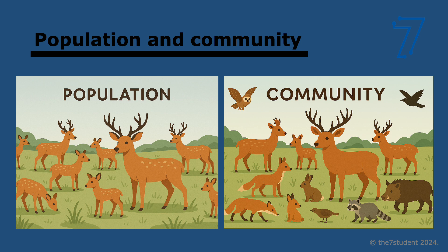A community is a group of populations living in an area and interacting with one another — basically all of the interacting organisms in an ecosystem. This includes plants, animals, fungi, bacteria, you name it.